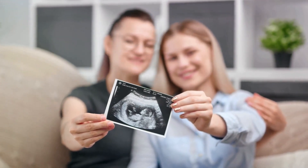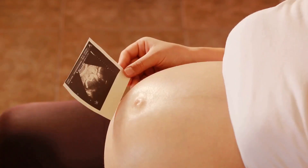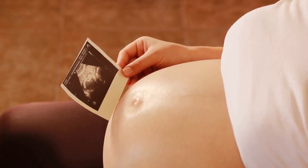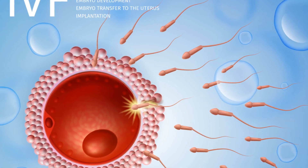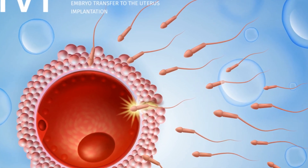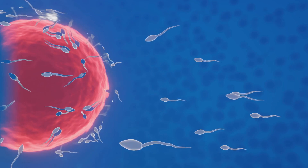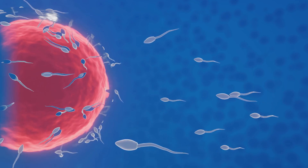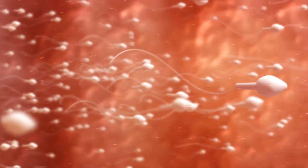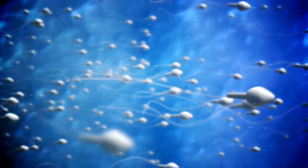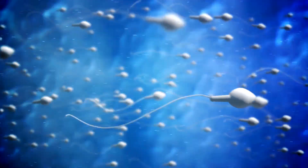The process starts with the journey of millions of sperm, released during ejaculation, making their way up the female reproductive tract. Their destination: the egg cell, or ovum, released by the female during ovulation. Yet in this crowded race of millions, only one sperm will achieve the ultimate prize — the chance to fertilize the egg. It's a battle of the fittest, showcasing nature's own version of survival of the fittest.